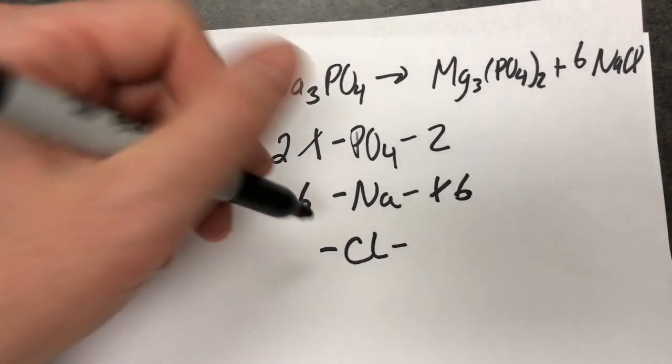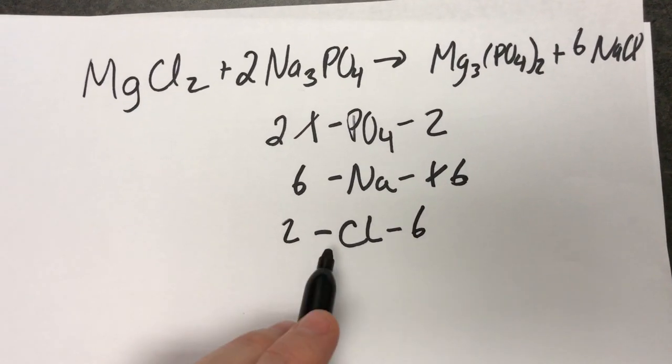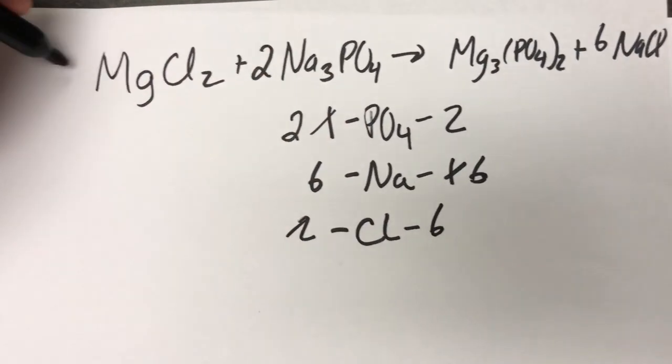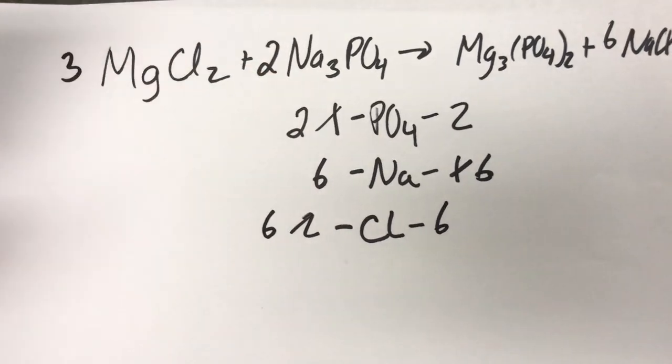So for chlorine on my left hand side I have two. On my right hand side I have six. Six divided by two is three. And that's why I put a three there.